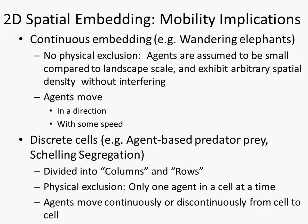There's no physical exclusion in continuous space. Two objects whose paths cross have no exclusionary principle that will require them to stop. We view it as if you're looking at Boston from 30,000 feet and you consider two ants crossing — they just cross, without impacting each other. They're assumed to be very small compared to the landscape scale and exhibit arbitrary density without concern. With discrete cells by contrast, we have physical occlusion: only one or zero agents in every cell, and agents move discontinuously from cell to cell.